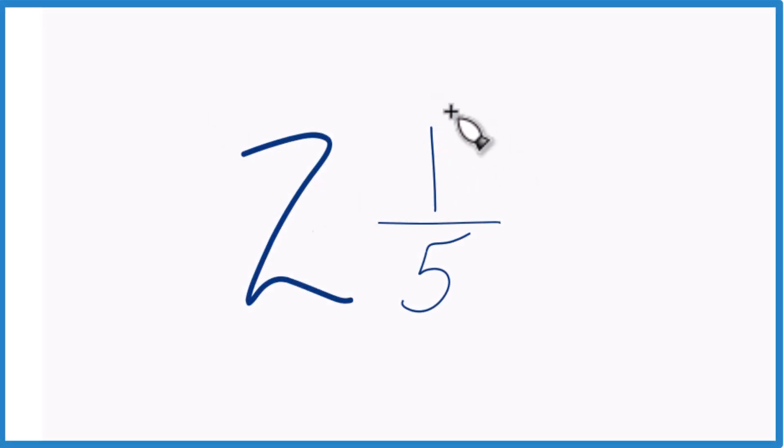Here's how you can write the mixed number 2 and 1 fifth as an improper fraction. That's where the numerator is greater than the denominator. So here's how you do it.